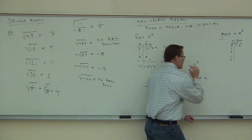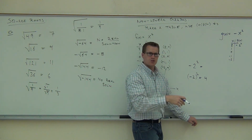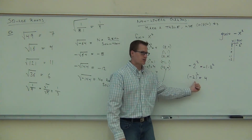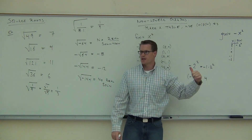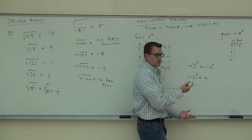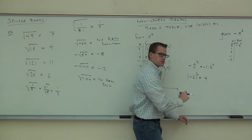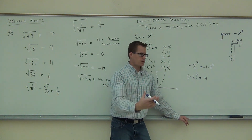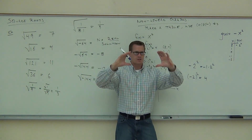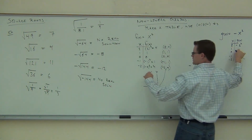Negative two in parentheses squared means negative two times negative two — that's four. But negative two squared without parentheses means negative two times two — that's negative four. Think of it as order of operations: this is really negative one times two squared. Do exponents first: two squared is four, then multiply by negative one — that's negative four. So without parentheses, the negative is not grouped with the number when you take the exponent. With parentheses, yes, the negative goes with it. Without parentheses, no.